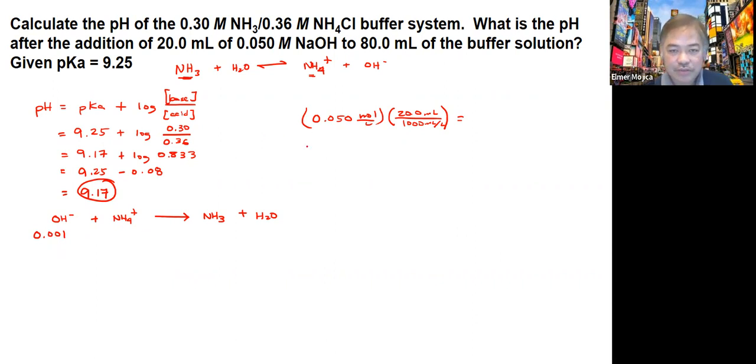For the ammonium ion, we have 0.36 moles per liter. At the volume that you have here, you have 80 mL over 1,000 mL per liter. So 0.36 times 80 divided by 1,000 gives you around 0.0288.